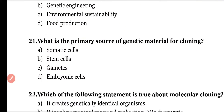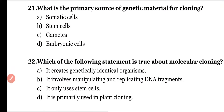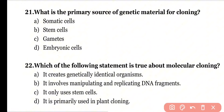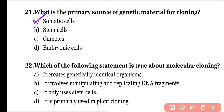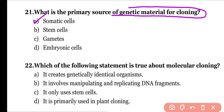Question number twenty-one: What is the primary source of genetic material for cloning? Options: somatic cell, stem cell, gametes, embryonic cell. Correct answer is option A. Somatic cell is the primary source of genetic material for cloning purposes.